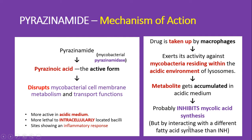The mycolic acid synthesis inhibition occurs by interacting with a different fatty acid synthase than that of isoniazid. Remember that both isoniazid and pyrazinamide share a similar mechanism in that they both inhibit mycolic acid synthesis, but via different fatty acid synthase enzymes.